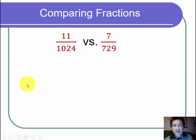What we're asked to do here is to compare 11 over 1024 and 7 over 729 to see which is bigger. I could do this by hand, but these numbers are messy and that's a lot of work. So I'm going to put this into a calculator and convert the fractions to decimals, dividing 11 over 1024 and dividing 7 over 729 in my calculator.